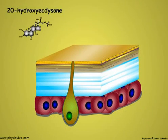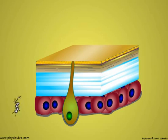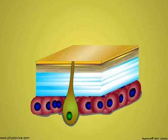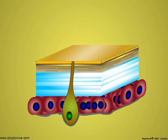The molting process begins when cuticular epidermal cells are stimulated by exposure to 20-hydroxyecdysone, the insect molting hormone. The hormone enters the epidermal cells where it stimulates genes related to molting and the formation of new cuticle. The activated epidermal cells undergo mitosis or grow by cellular enlargement. This is the period of growth to form a new larger cuticle for the next instar.